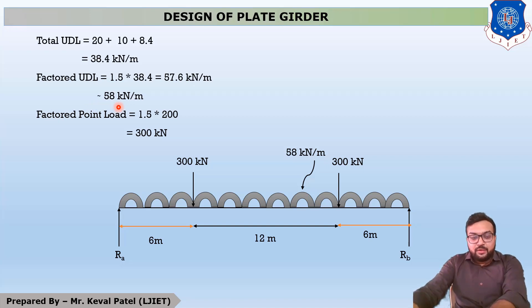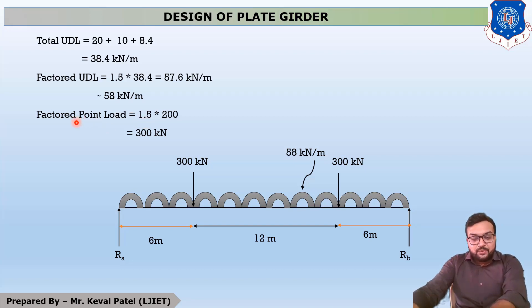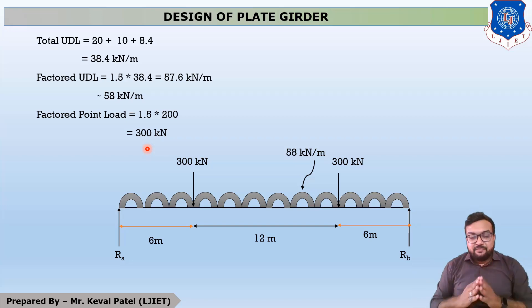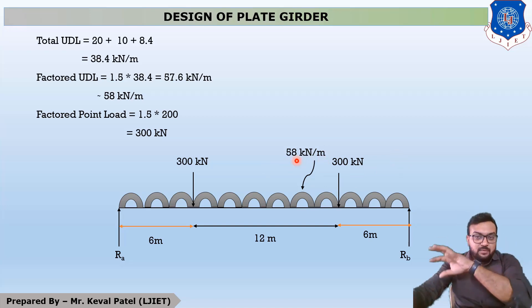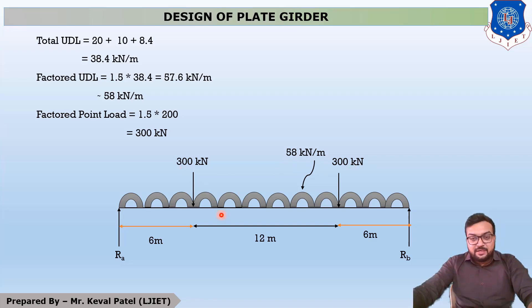The two point loads of 200 kN are unfactored, so the factored point load = 1.5 × 200 = 300 kN each. The final loading diagram for Step 1 shows a total factored UDL of 58 kN/m acting throughout the 24 m span, and two factored point loads of 300 kN each applied at 6 meters from both ends.